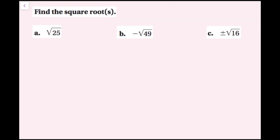For this example, we're going to find the square roots. For part a, this is read the square root of 25, or radical 25. I need to find a number that multiplied by itself equals 25 — what number squared equals 25. Well, that's going to be 5, because 5 times 5 is 25. There's no negative sign or plus or minus here, so I only want the positive square root. My answer is positive 5.